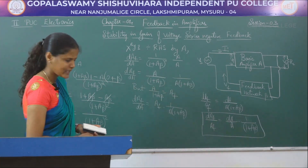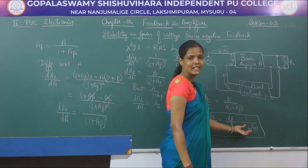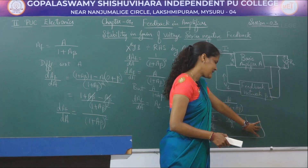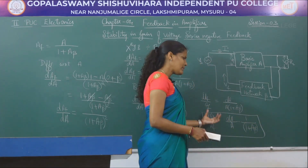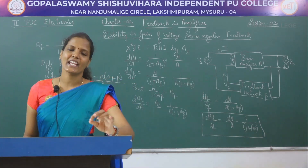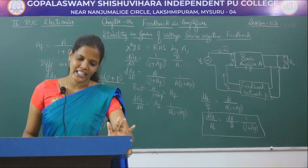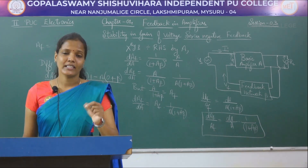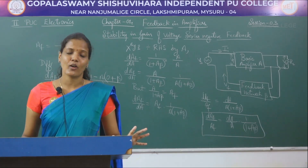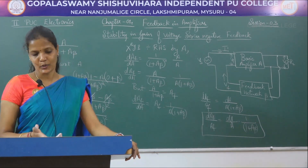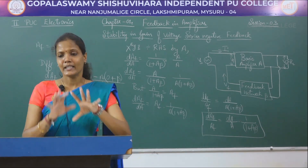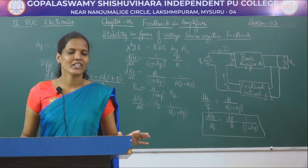Since (1 plus A·beta) is greater than 1, the percentage variation in AF will be much less than the percentage variation in A. So in the feedback network, the percentage change in AF is much less than the percentage variation in A. Even though there is a change in A (the open loop gain), there is only a small variation in the overall gain AF. Since the feedback circuit contains stable parameters like resistors, capacitors, and inductors, the overall amplifier circuit will be much more stable.